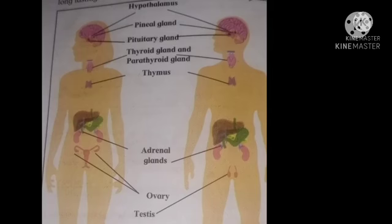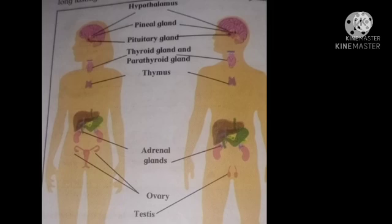These are the endocrine glands. Look at the image in your textbook on page number 176. The glands include: hypothalamus gland, pineal gland, pituitary gland, thyroid gland, parathyroid gland, thymus, adrenal gland, ovary, and testes. The adrenal glands are situated exactly above the kidneys. Some important functions of these endocrine glands are given in your textbook on page number 177. You are all supposed to write down this chart and memorize the functions and names of these glands. Spell them properly.